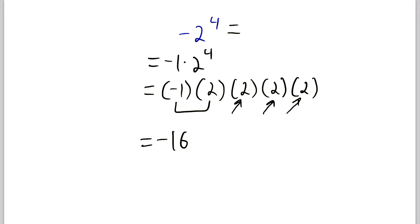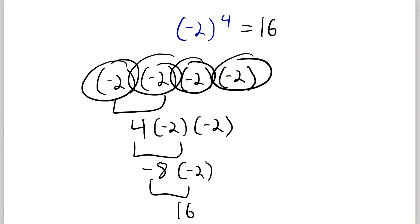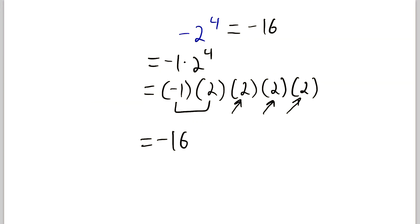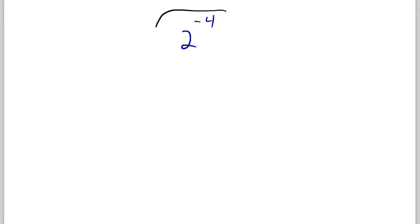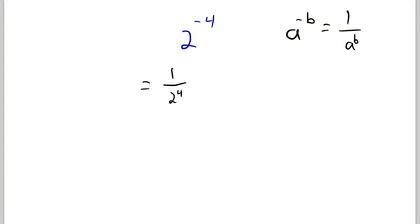The difference between these two problems is an important thing to keep in mind when you're using a calculator, because it's very easy to punch in one expression when you mean to be punching in the other, and most calculators will give you two different answers for those expressions. Alright, now we have two to the power of negative four. All we have to remember is that a to the power of negative b is equal to one over a to the power of b. So two to the power of negative four equals one over two to the power of four, which is one over 16.